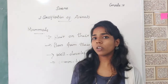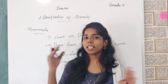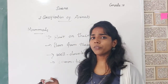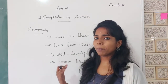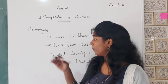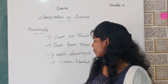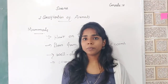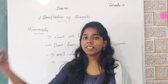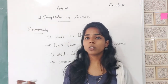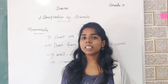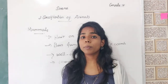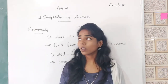Mammals have hair on their bodies, but mammals like whales and dolphins do not have hair. They are all born from their mother's womb and they drink mother's milk. They have a well-developed brain. Mammals are warm-blooded animals and can live on land. Mammals like whales and dolphins are aquatic mammals. All mammals breathe with the help of lungs, including aquatic mammals. That's all about mammals.